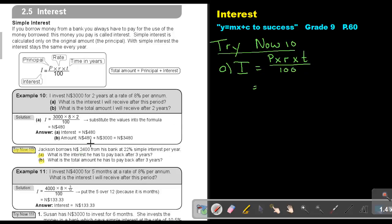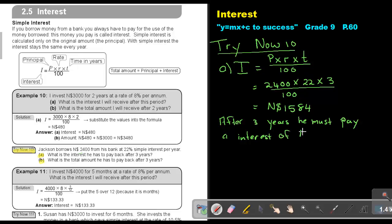So let's first, what is the principal? The principal is 2,400. What is the rate? That's 22. What is the time? That's 3 years. And I divide by 100. And if I do that, I will get an amount of 1,584. So we can say, after 3 years, he must pay an interest of 1,584.